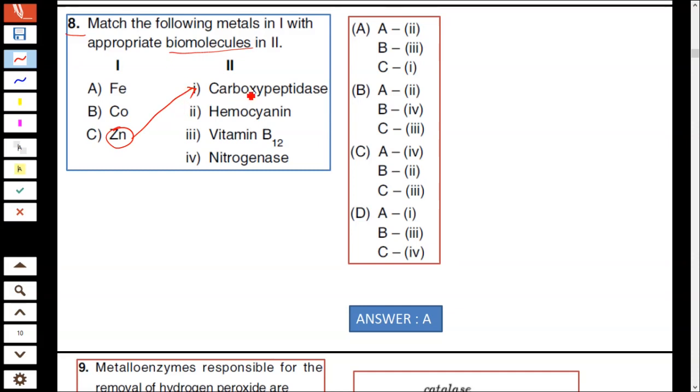Iron Fe is related to hemocyanin. Cobalt is related to vitamin B₁₂. Vitamin B₁₂ is cyanocobalamin, which contains cobalt³⁺ ion. Hence cobalt is related to vitamin B₁₂, and iron is in hemocyanin. Nitrogenase contains molybdenum. Hence option A is correct.